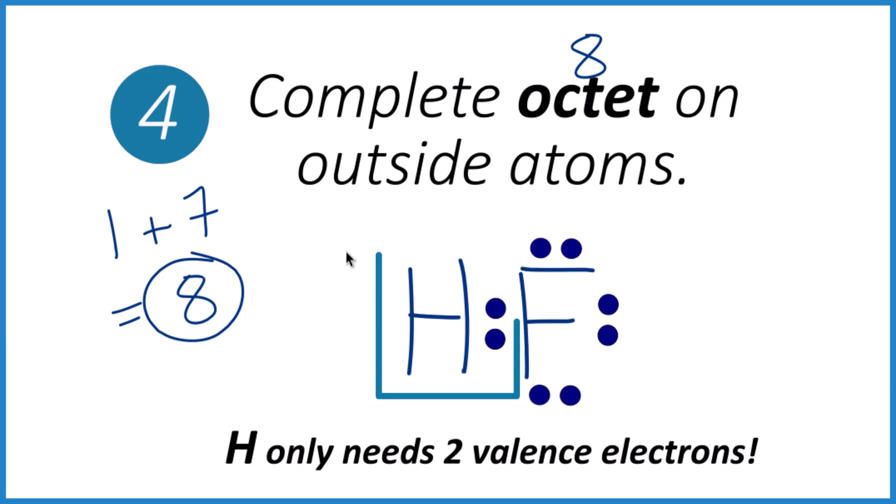We've used all eight. Two, four, six, eight. Hydrogen has two. We're good. Fluorine has eight. That's the correct Lewis structure for HF.